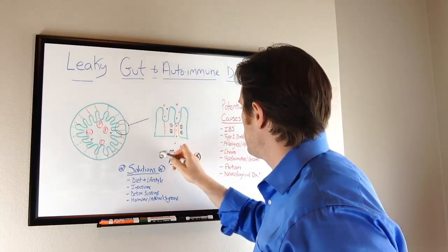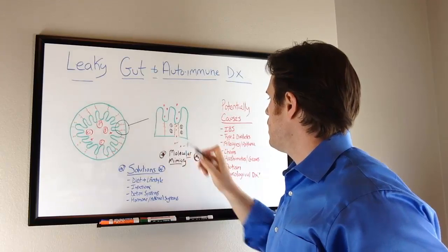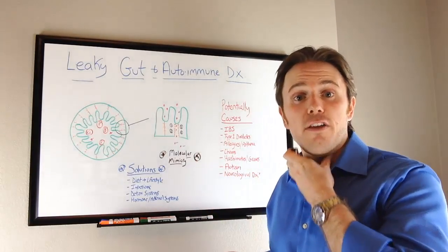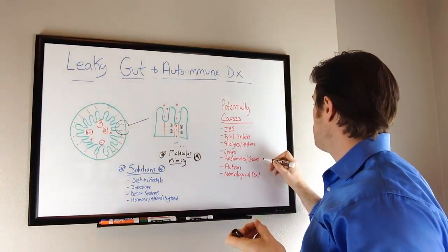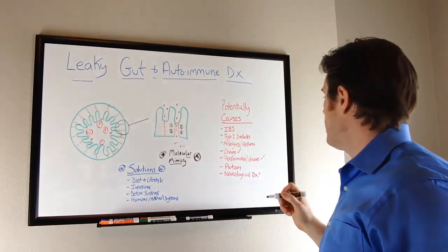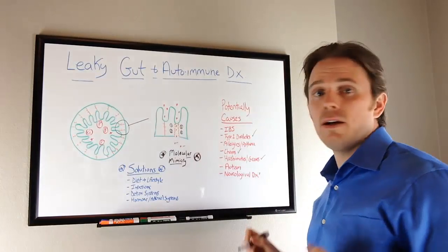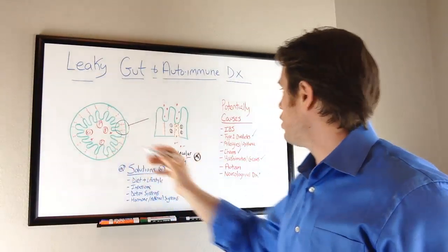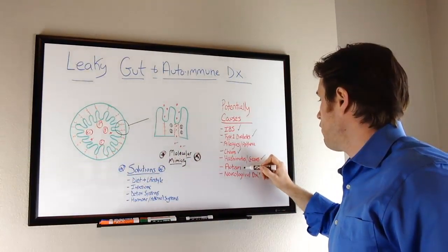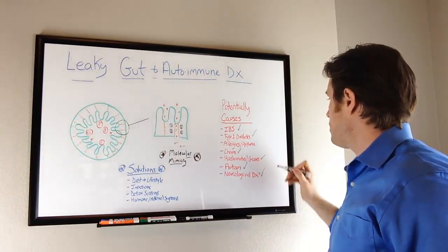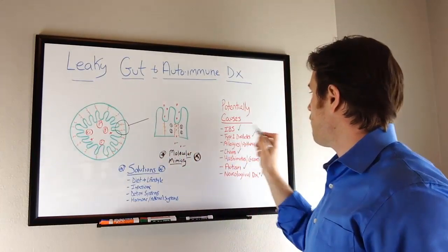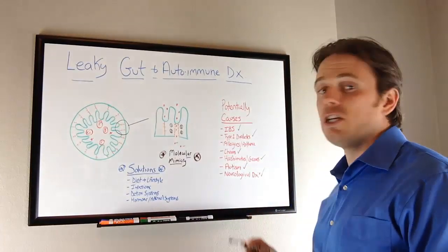That whole process is what we call molecular mimicry — where our immune system tags these various surface proteins. Depending on which tissues share those proteins, different autoimmune conditions can develop: if we tag the thyroid gland, we develop Hashimoto's or potentially Graves' disease; if we tag the small intestine, we may develop Crohn's; if we tag the pancreas, it may be diabetes; systemic gut inflammation could be IBS; and if neurological tissue is affected, it could increase chances of autism, MS, dementia, or Alzheimer's.